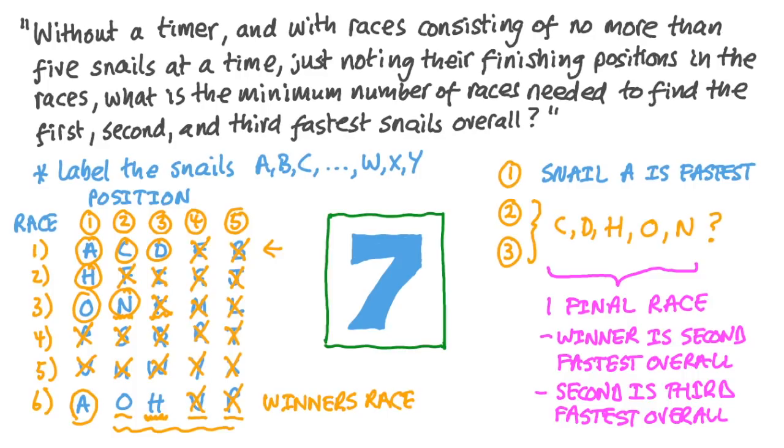Now, if you tried this on a pack of 25 racing snails yourself, the order of the letters that you get would very probably be different to the order of letters that we got. But it's the process of running five initial races, followed by a sixth winner's race, then the logic and analysis we used, followed by the final seventh race, that leads us to our one, two, and three fastest snails in the pack.